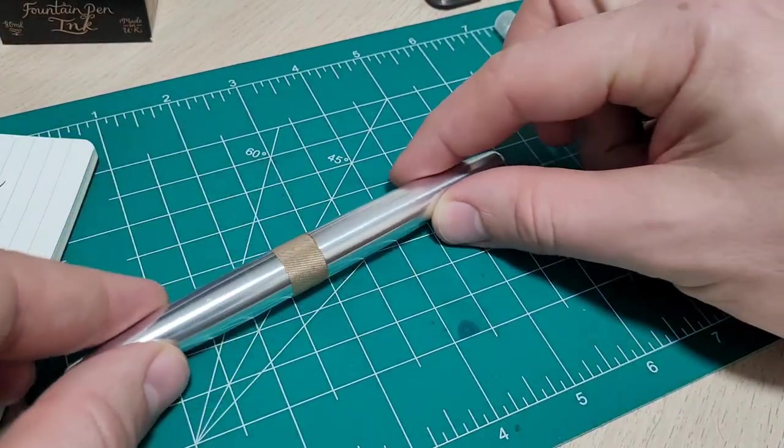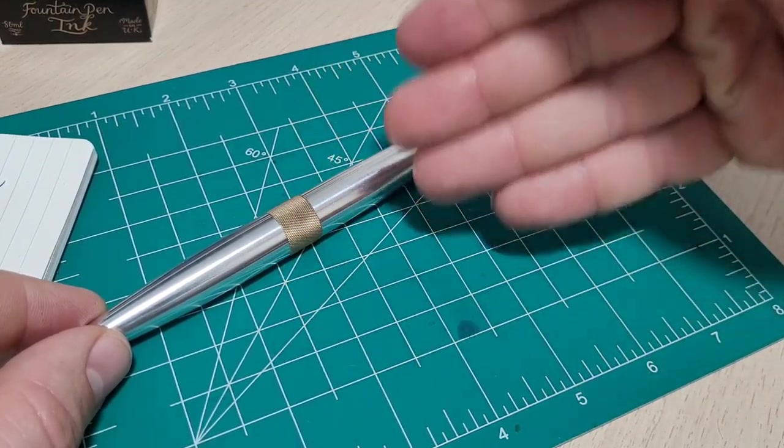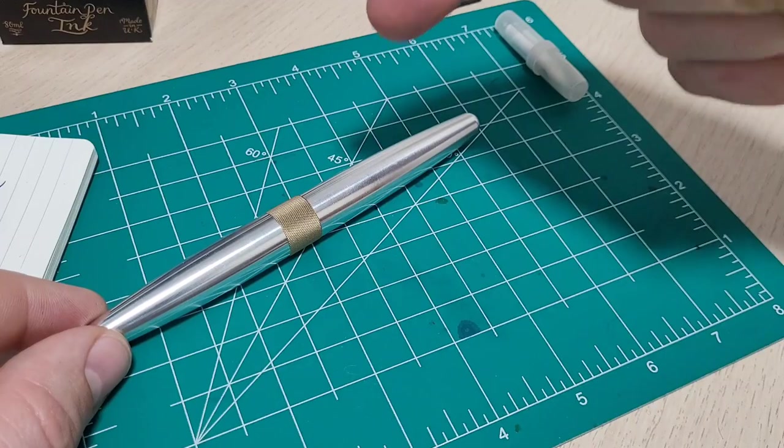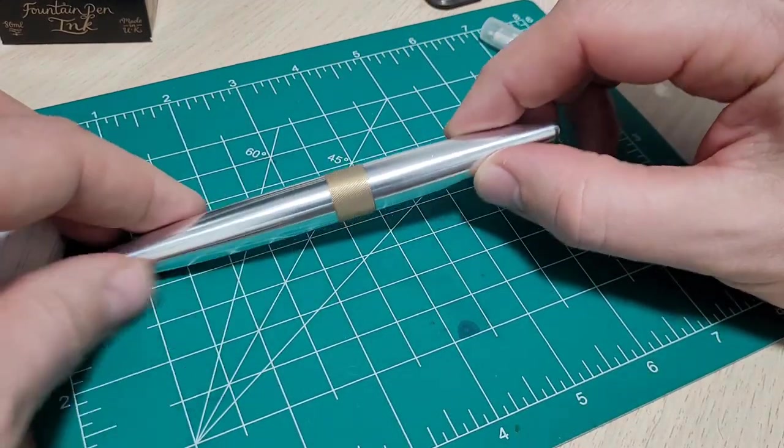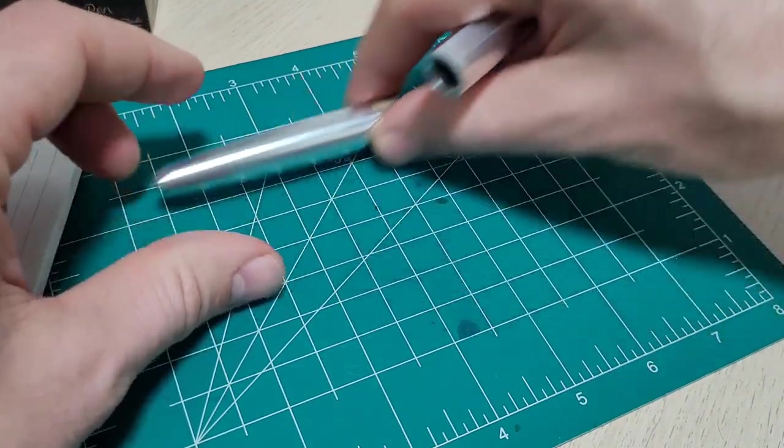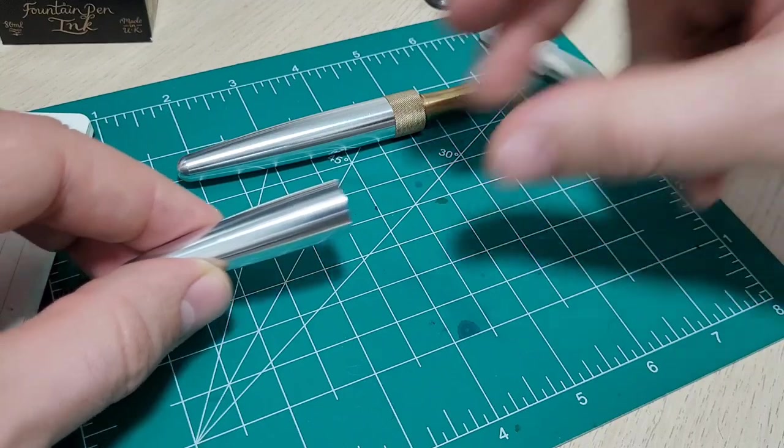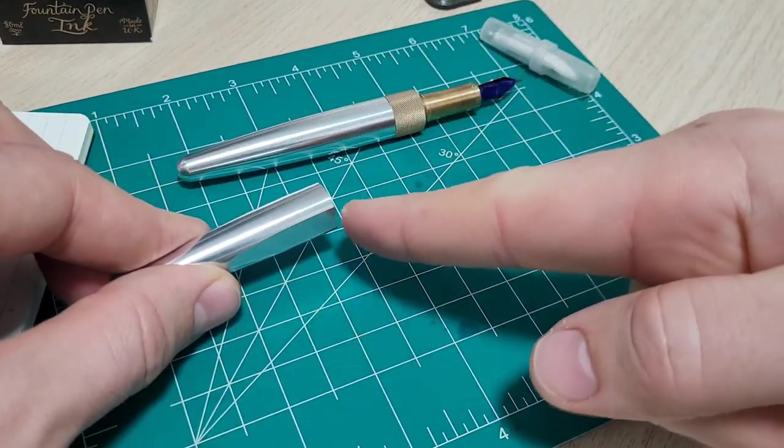So the fit and finish on this is really nice. This is made, he told me, in a Swiss lathe, which again has nothing to do with the pen unless you're a guy like me who loves that type of stuff. I always wonder what type of machine something was made on. So a Swiss lathe is really cool. Typical lathes, you put your stock into the chuck and it spins and then you have your cutting tools to form and shape the part and cut threads and all that.